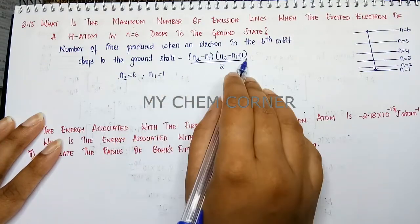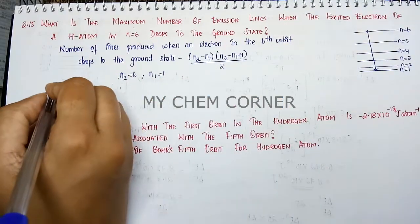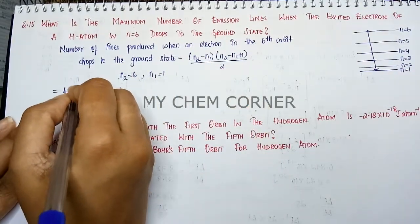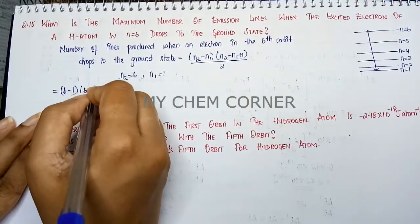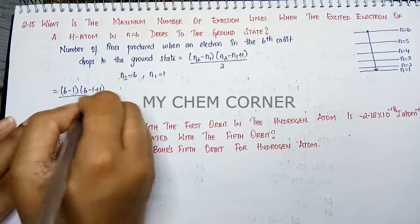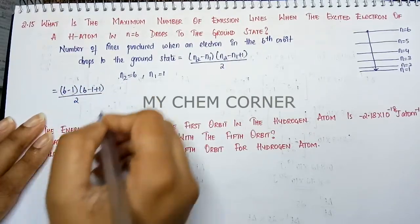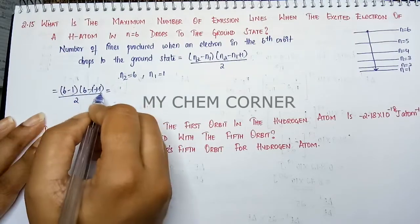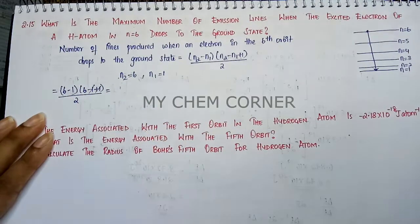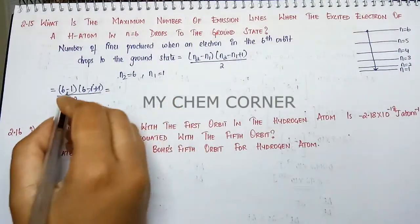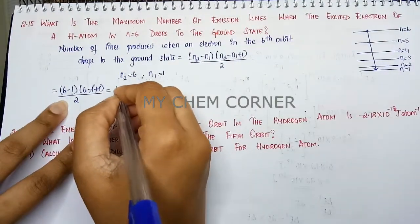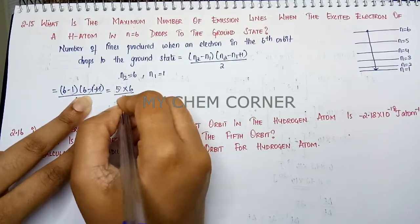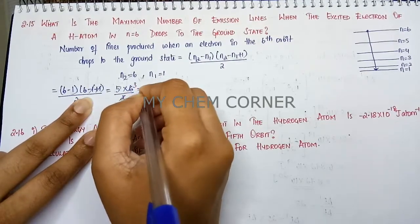We'll just substitute it in the formula here. So this is equal to n2 is 6 minus 1, into 6 minus 1 plus 1, divided by 2. Now this is equal to—plus 1 and minus 1 will get cancelled. So here 6 minus 1 is 5 into 6 by 2. This will be 3, and therefore we will have 15 lines.